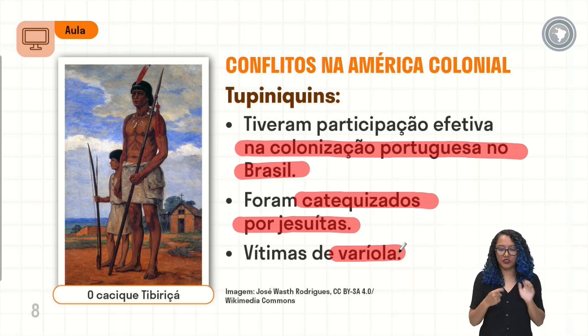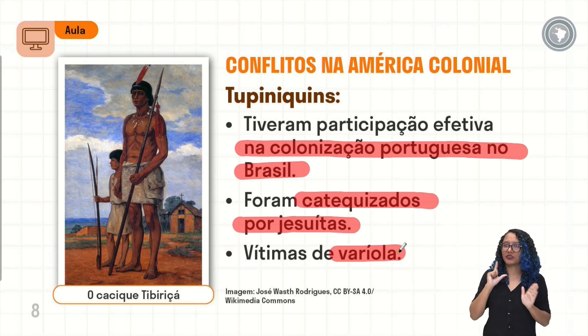A varíola é uma doença altamente mortal. Atualmente não tem casos registrados de varíola — ela já foi erradicada. Quais são os sintomas da varíola? Febre alta, dor de cabeça, erupções na pele que podem ocasionar pústulas, vômitos e náuseas. Todos esses sintomas ocasionavam hemorragia e a pessoa viria a óbito no prazo de 48 a 72 horas após o contato com a varíola. Ela era altamente infecciosa, o que também foi um dos motivos para a mortandade de muitas tribos indígenas.